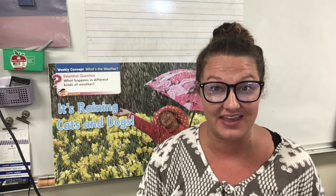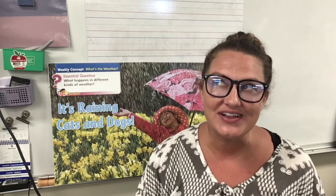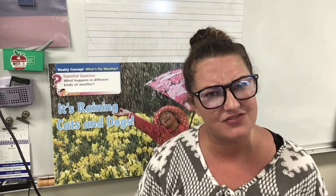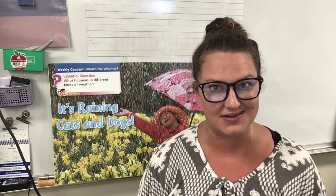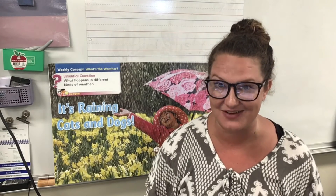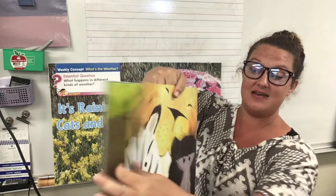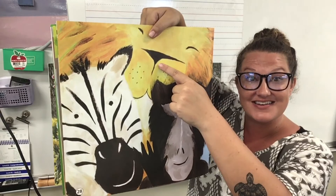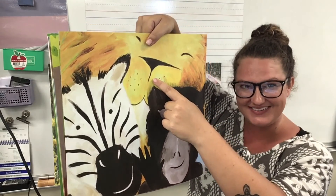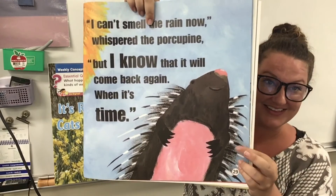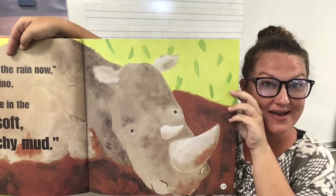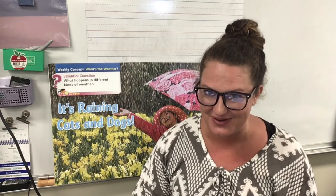It was interesting to think about how the characters in our story — the animals — really used their five senses to figure out that the rain was coming. And then it was cool to think about what they did after it rained. Let's look at the characters again that were in the story. We had the zebra, the baboons, the lion — and there are a couple more too, do you remember? We also had the porcupine with the long quills, and the rhino that liked to play in the mud. Those are some of the characters in our story. Did you have a favorite?